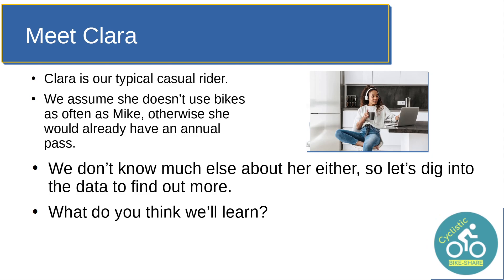And then we'd also meet Clara, our typical casual rider — again, another free image off Shutterstock. We're going to assume she doesn't use bikes as often as Mike; otherwise, of course she'd have an annual pass already. But we're trying to figure out what would make her get one. We don't know much else about her, so we'll dig into the data to find more about her.